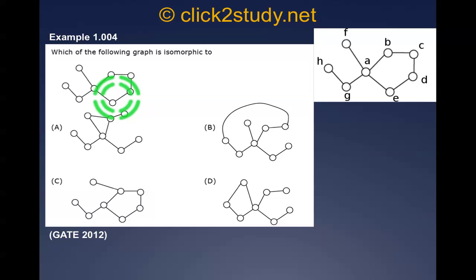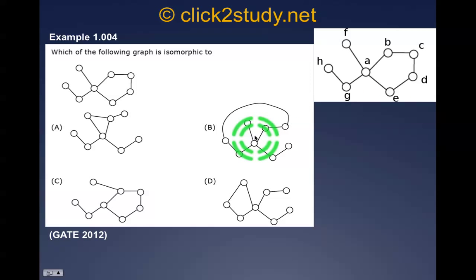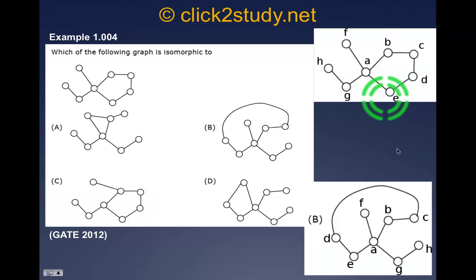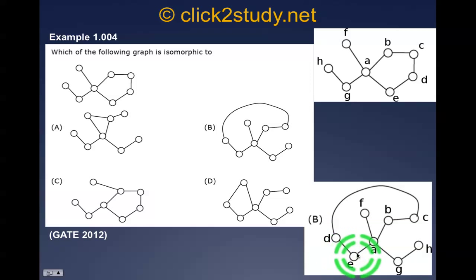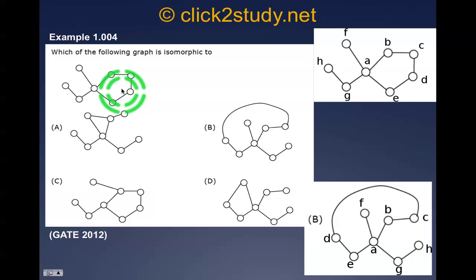To distinguish the two remaining candidates, label the nodes: a, b, c, d, e, f, g, h. Tracing the structure of the original graph and mapping it to the candidate — from a to b to c, then c to d to e back to a, and a branch from a to g to h — this matches option B, confirming it is isomorphic to the given graph.